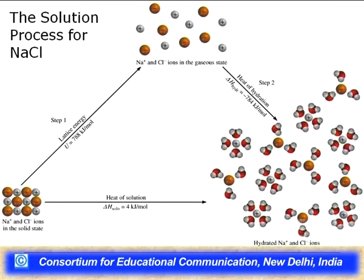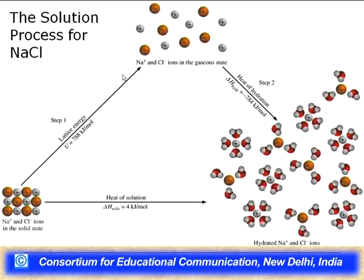What happens when sodium chloride is added to water is that water molecules surround the ions, forming a sheath around them. The ion-dipole interaction forces, when they become greater than the forces experienced by those ions from oppositely charged ions within the crystal lattice, cause the ions to be set free as solvated ions in solution. This dissolution process, using Hess's law, can be visualized as a sum of two steps.